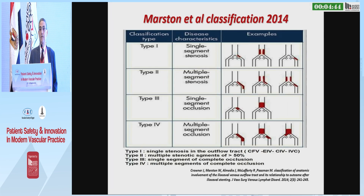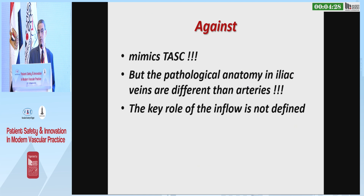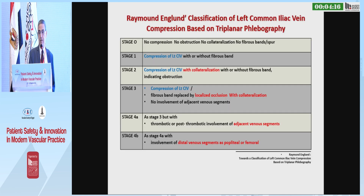One of the earliest classifications of iliac venous occlusion is that of Marston-Nital in 2014. It mimicked the TASC classification for the arterial system with four types: type 1, 2, 3, and 4. However, the pathological anatomy in the iliac veins is different, and the key role of the inflow is not defined in this classification.